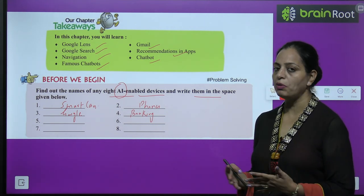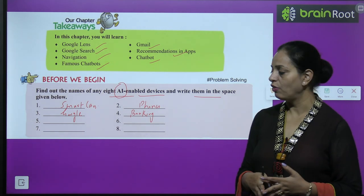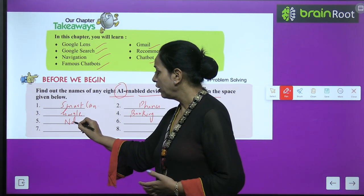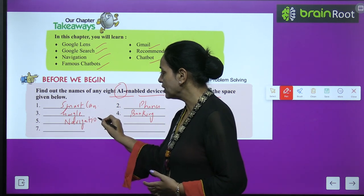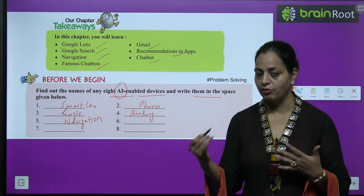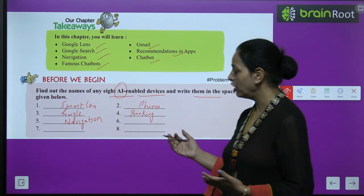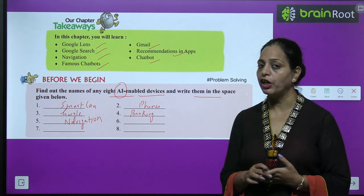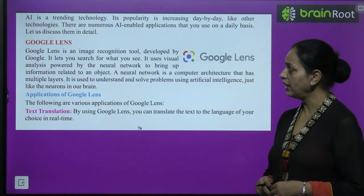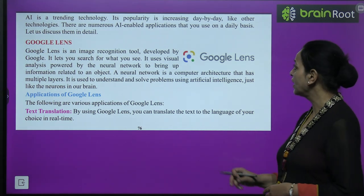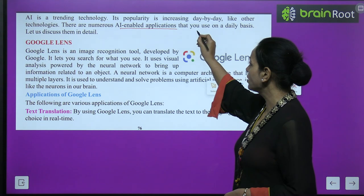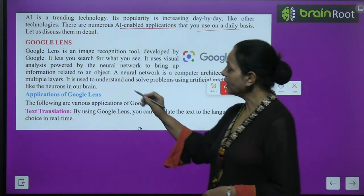There are so many examples of AI that we can see in our daily life, like banking and navigation. There are so many devices in which we are using AI. AI is a trending technology and its popularity is increasing day by day. Like other technologies, there are numerous AI-enabled applications that you use on a daily basis. Let us discuss them in detail.